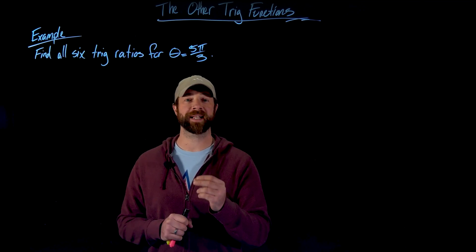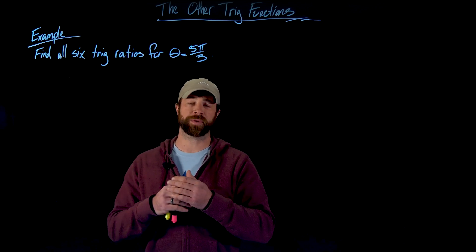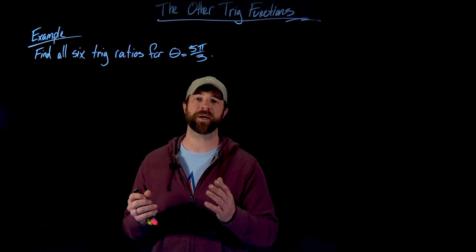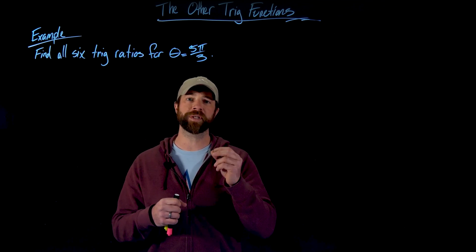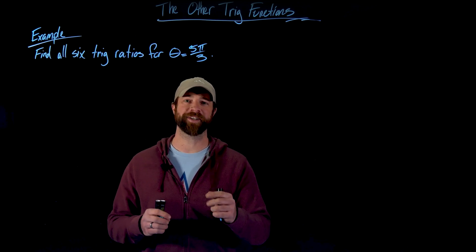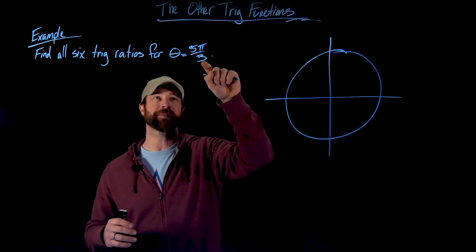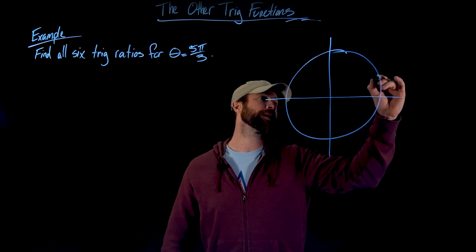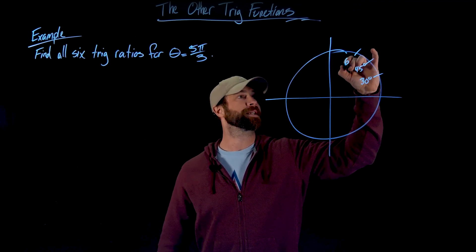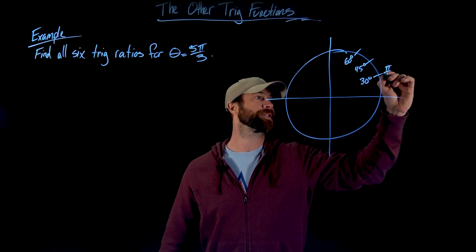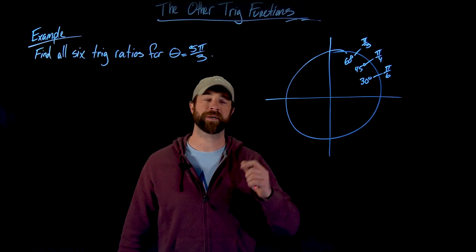We're now equipped to find all six trig ratios for the angle 5π/3. I'll walk through the entire process using just the knowledge I have. First, I need to get a feel for where 5π/3 is, so I'll draw a quick unit circle. I always start by marking the three known reference angles: 30, 45, and 60 degrees — or in radians, π/6, π/4, and π/3.